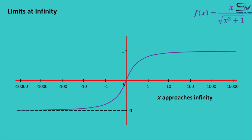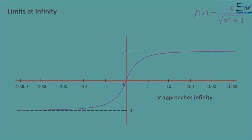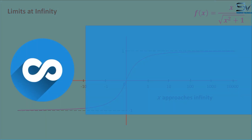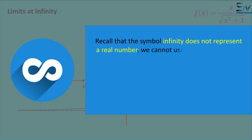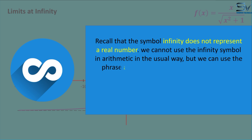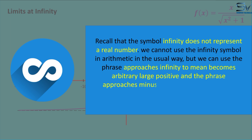Instead of writing 'x becomes an arbitrarily large number', here I have written 'x approaches infinity'. Why infinity? Recall that the symbol infinity does not represent a real number. We cannot use the infinity symbol in arithmetic in the usual way, but we can use the phrase 'approaches infinity' to mean becomes arbitrarily large positive, and 'approaches minus infinity' to mean becomes arbitrarily large negative.